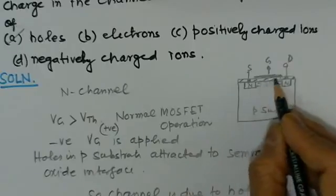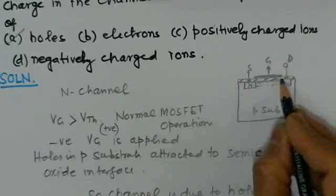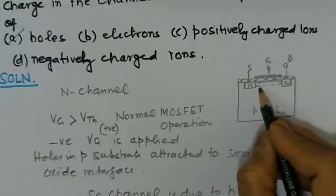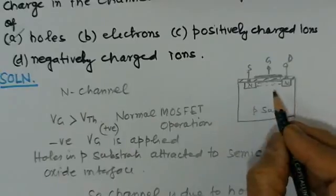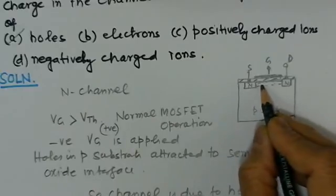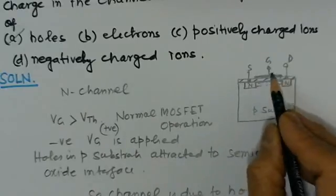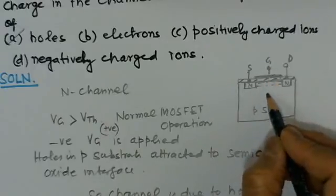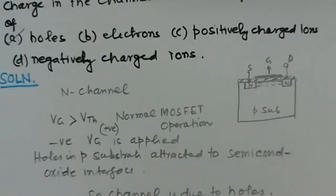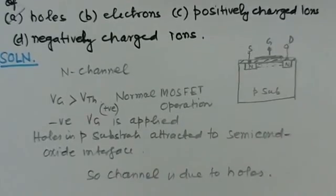This is semiconductor and this is an oxide. So this interface here, they come and get accumulated here and they form a channel. And this channel in the normal case is of electrons because we apply a positive gate. Here the channel would be of holes. So this channel will consist of holes.